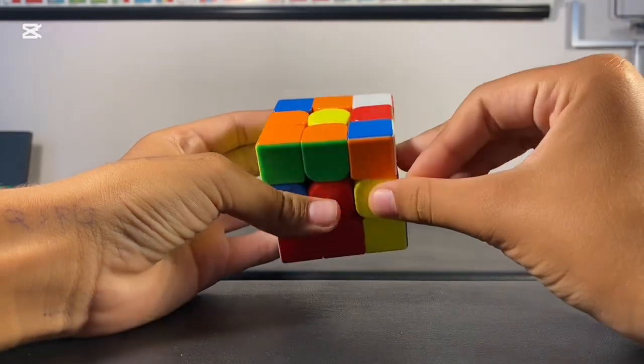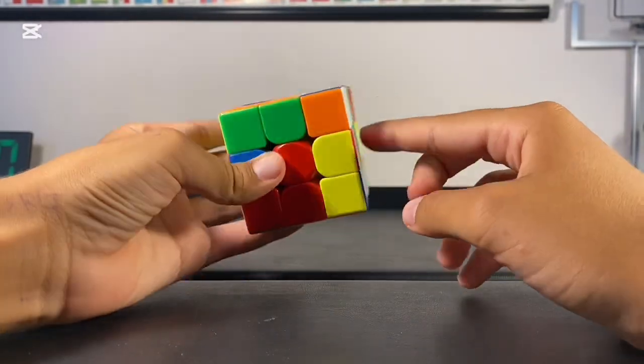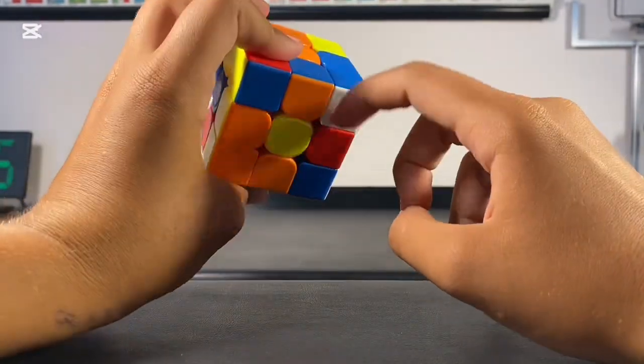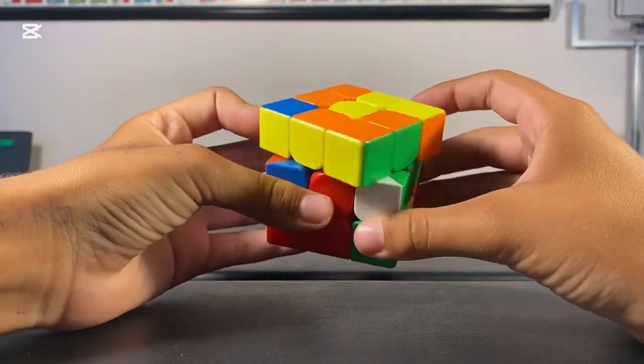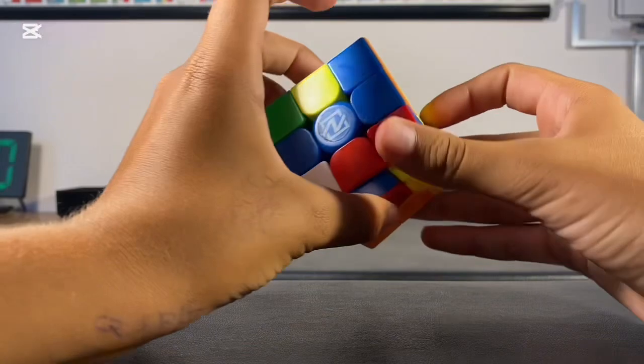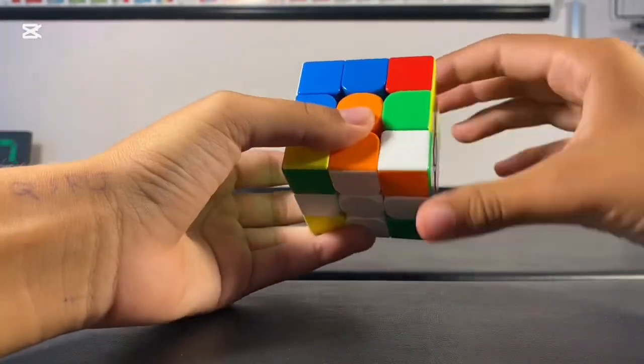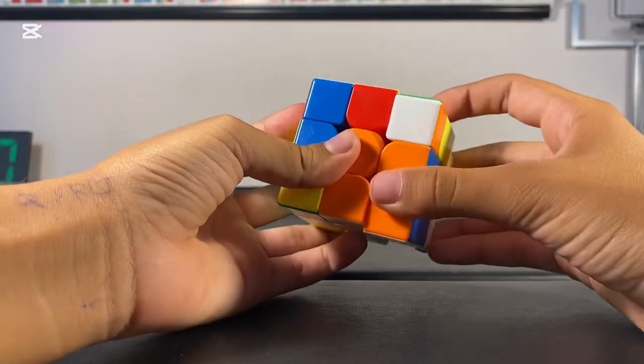Then you look for the edge with those colors, and place it so that you can do the following algorithm. R-U-R prime, U-prime. You continue to do this algorithm until the pieces get into place. Do this with all the edges and corners until you finish with this step.